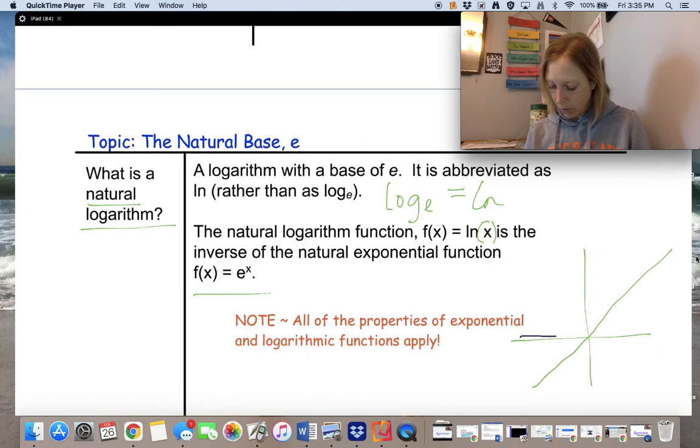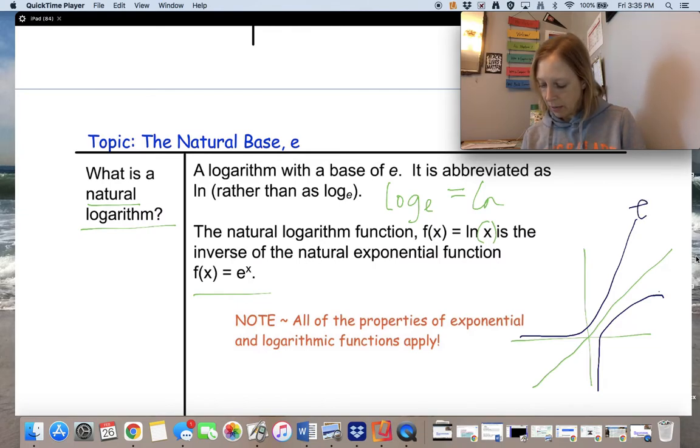Okay, so we've got one that would be exponential growth. And then we would have the other one that would have the y-axis as its asymptote. So this would be e to the x, and this would be ln of x. And this one would kind of flatten out.